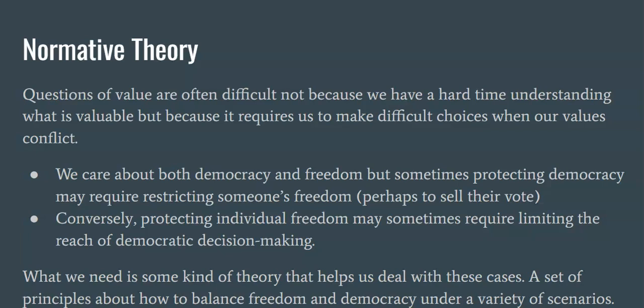For example, democracy might sometimes require restricting someone's freedom. In a democracy, I have a right to vote — I am free to vote — but I'm not free to sell my vote. We think there would be something particularly undemocratic if we allowed rich people to buy the votes of poor people and then use those votes to pass policies that favor themselves. Selling one's vote seems to be anti-democratic, but it also seems to be a kind of illiberalism in the sense that it restricts people's freedom. You might think that it's my vote — I can do whatever I want with it.